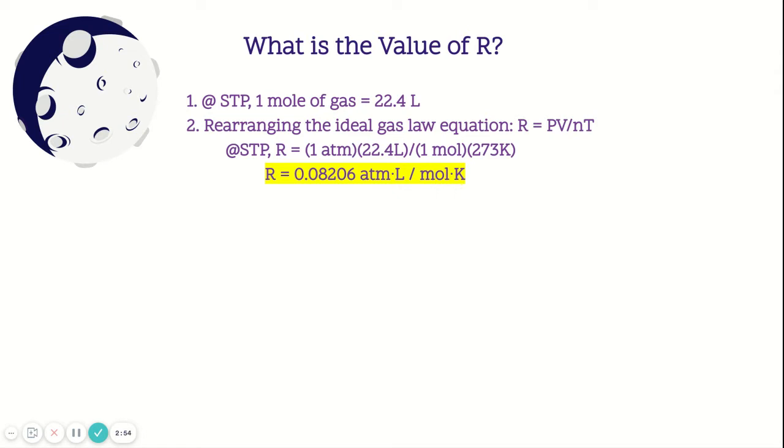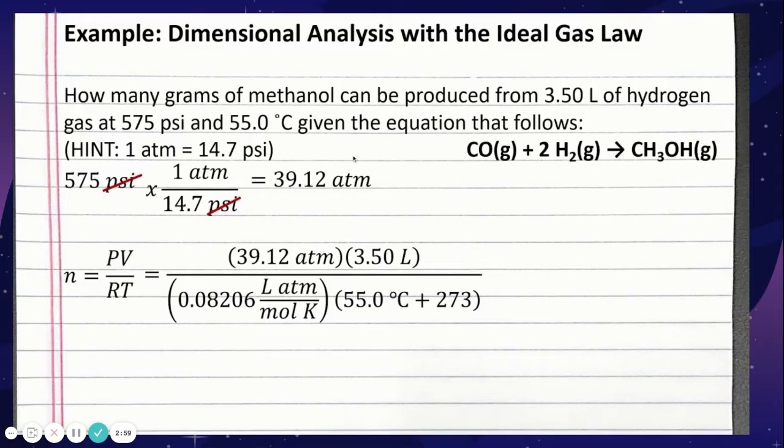So here's an example equation. How many grams of methanol can be produced from 3.50 liters, so I'm not going to have to convert that, I'm just going to be able to plug it in, of hydrogen gas at 575 psi. I know I can't use psi, so I have to use my conversion which is here: 1 atm equals 14.7 psi. And 55 degrees Celsius. Again, I know I'm not going to be able to use Celsius. I'm going to have to convert to kelvin by adding 273.